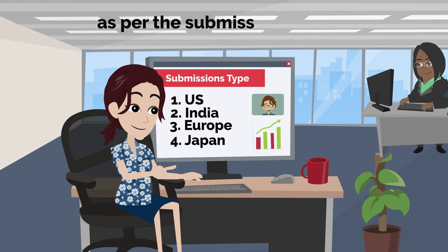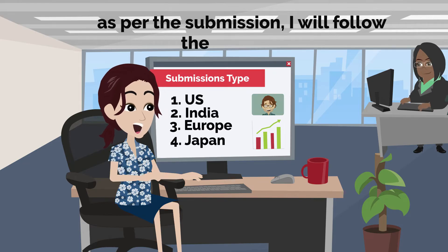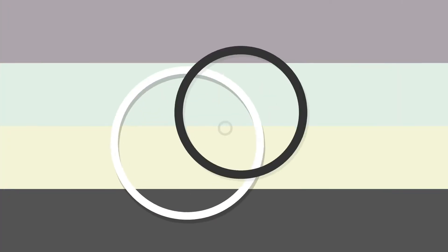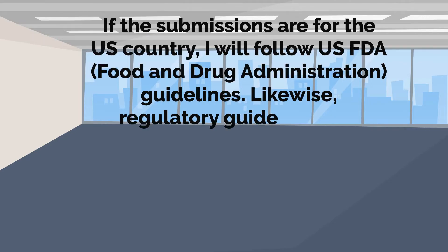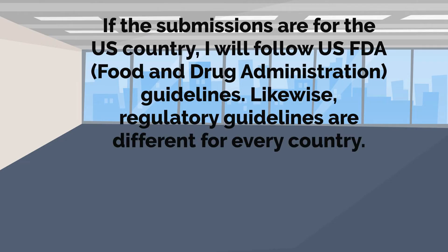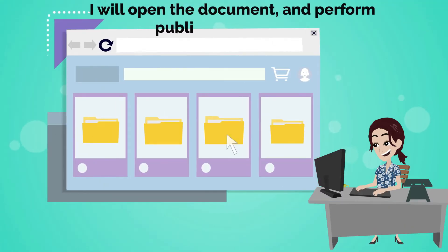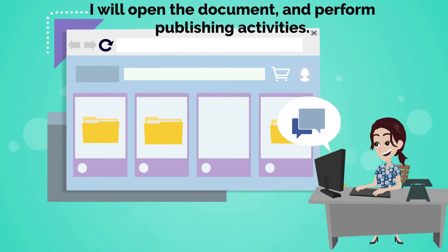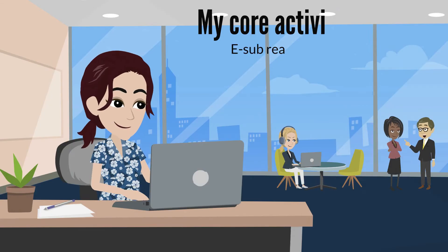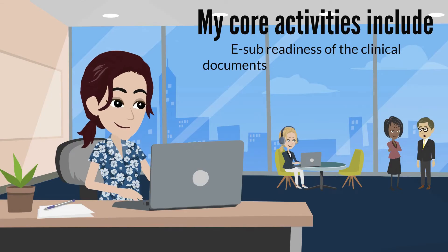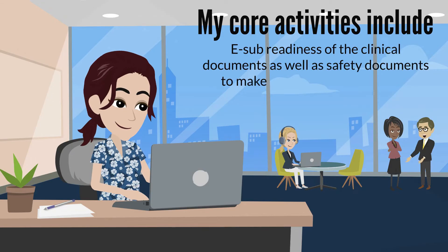I check the submission application type and the region it belongs to. As per the submission, I follow the guidelines — if the submissions are for the US, I follow US FDA guidelines. Likewise, regulatory guidelines are different for every country. I then open the document and perform publishing activities.